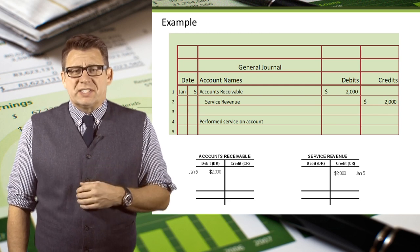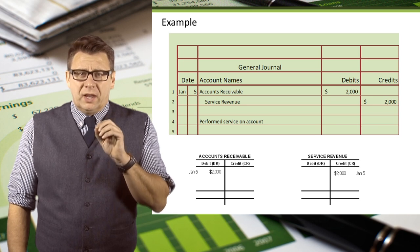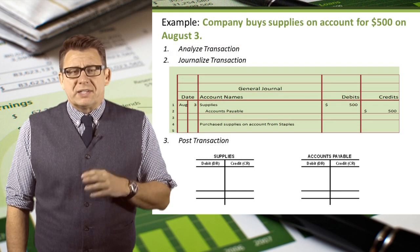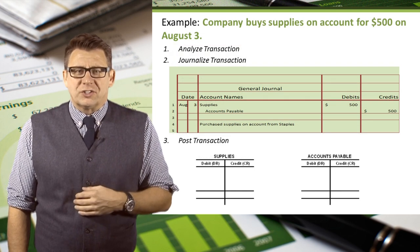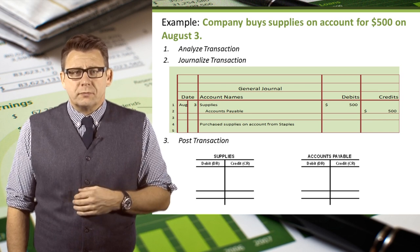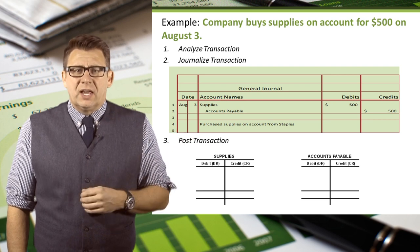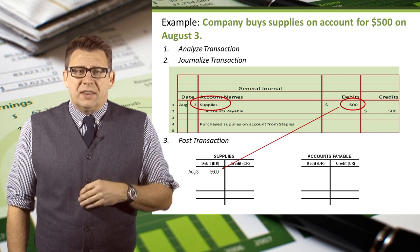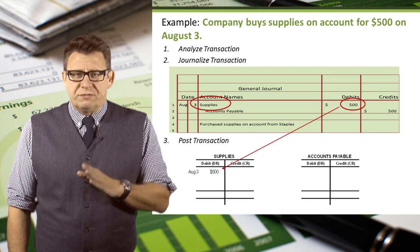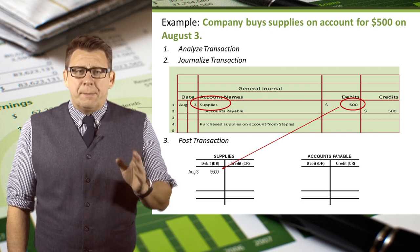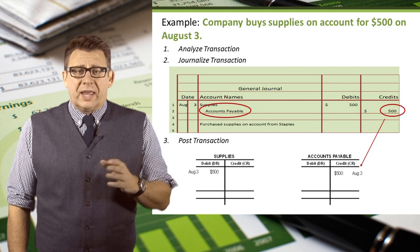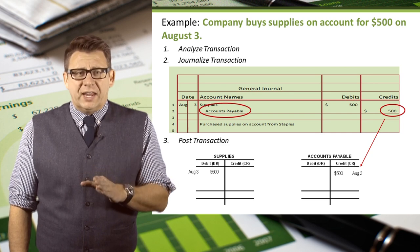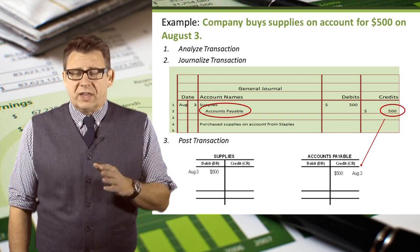Let's look at three previous examples and put this step in context of the accounting cycle. In this example, a company bought supplies for $500 on account. The date was August 3rd. So we analyzed the transaction and journalized it. Now we need to post this to the ledger. Supplies is the debit account and the amount is $500, so we post $500 and the date to the debit side of the supplies account. Accounts payable is the credit account and the amount is also $500, so we post $500 and the date to the credit side of the accounts payable account.